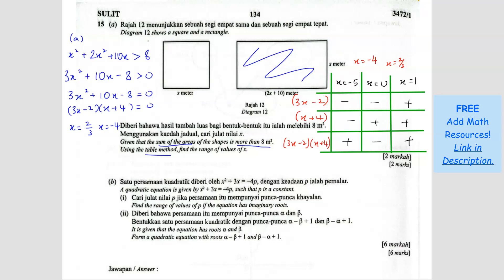Since we are looking for more than 0, which means positive, we take the positive regions. Therefore the answer is: x less than negative 4, or x more than 2/3. This is the range of x.